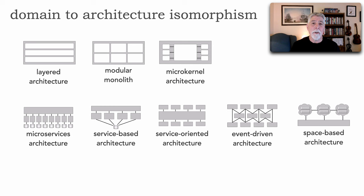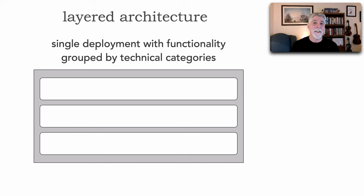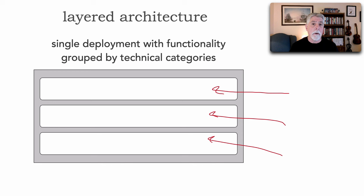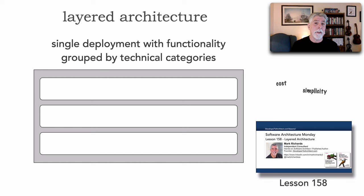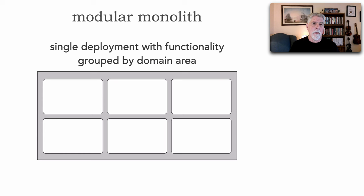Let's start with the traditional layered architecture. The shape of layered architecture is a single deployment unit with functionality grouped by technical categories — a presentation layer, business layer, persistence layer, and so on. Cost and simplicity also contribute to the shape of layered architecture. You can find out more in lesson 158.